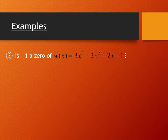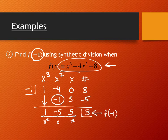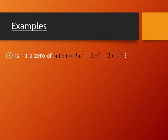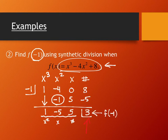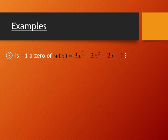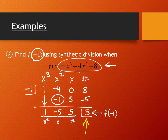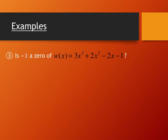This problem asks a similar question but differently. One problem asked to find f of negative 1; this one asks if negative 1 is a zero. Whether something is a zero depends on what happens in the remainder spot at the end of synthetic division. If you get a zero there, it is a zero and a factor—it divides out evenly. If you get something else, like 3, it's not a factor because there's a remainder.